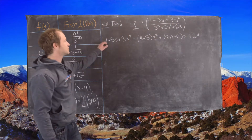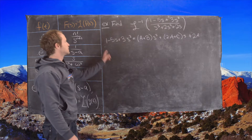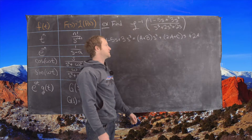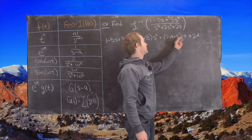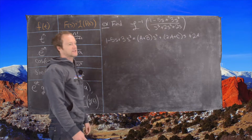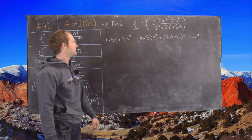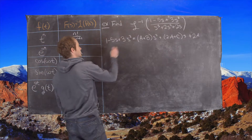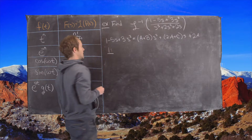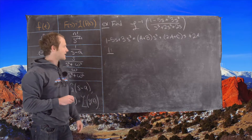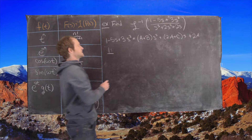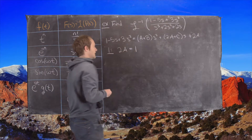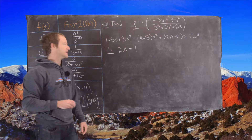Continuing our partial fraction decomposition, we have 1 minus 5s plus 3s squared equals quantity A plus B times s squared plus quantity 2A plus C times s plus 2A. This gives us a system of equations for the constant, s, and s squared coefficients. Starting with the constant: 2A equals 1.